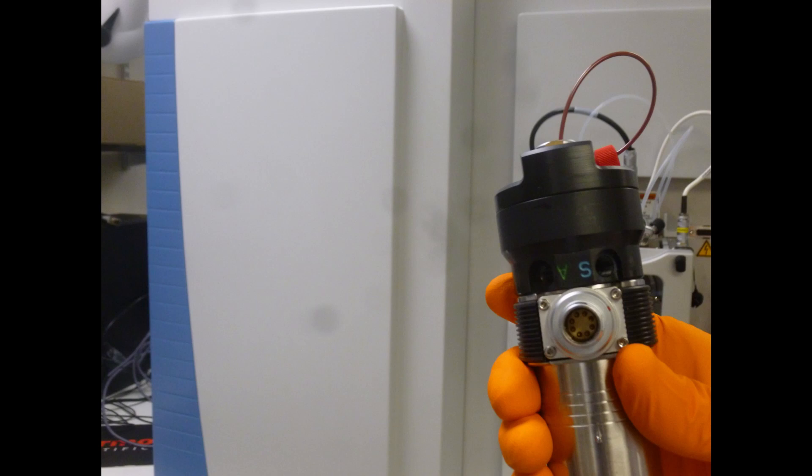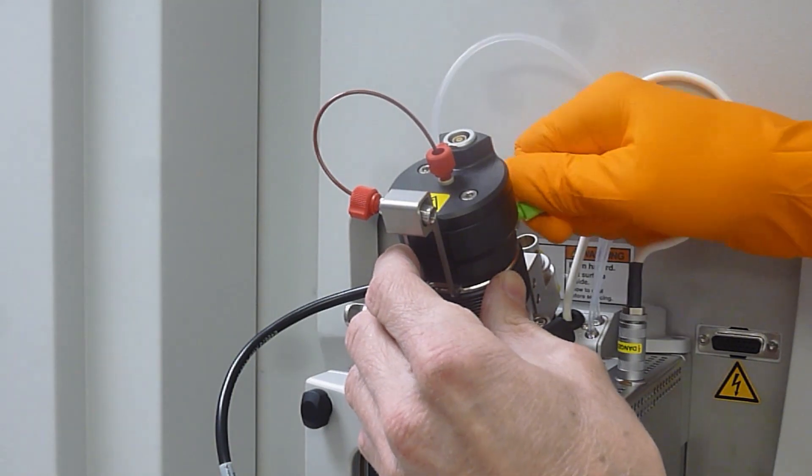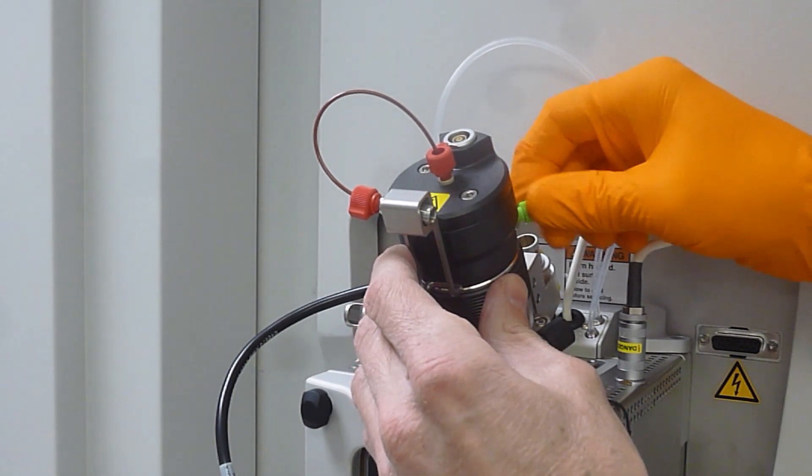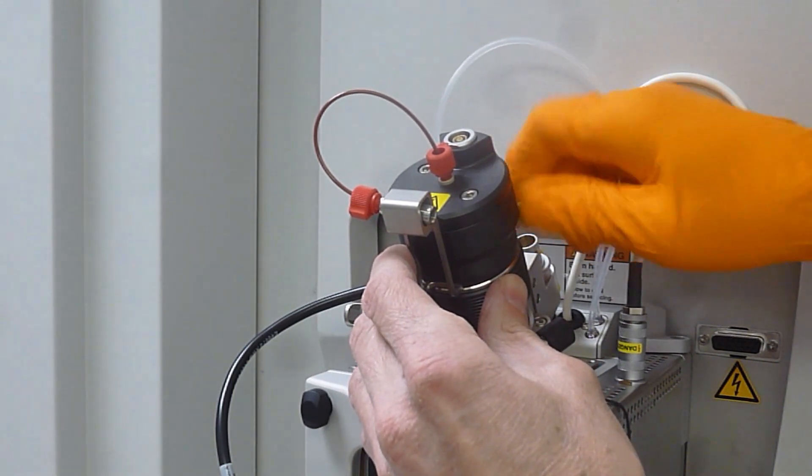If you have any confusion about which way around they go, check the engravings on the probe itself to see if they match those on the instrument. Fit the green tube. They can be a bit of a fiddle to get at the right angle.